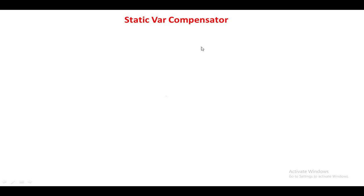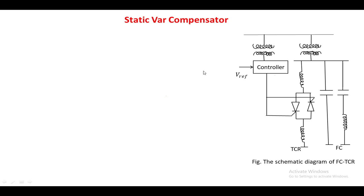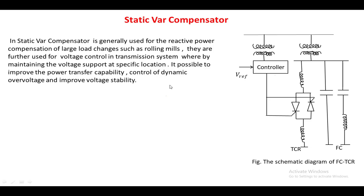The static VAR compensator obtains the required reactive power for the HVDC system by means of power electronic devices, which is why it is called a static VAR compensator. In the layout, there is a point where reactive power is applied, a controller for the TCR, a fixed capacitor, and a fixed capacitor along with a reactance. The controller provides gate pulses to thyristors T1 and T2.